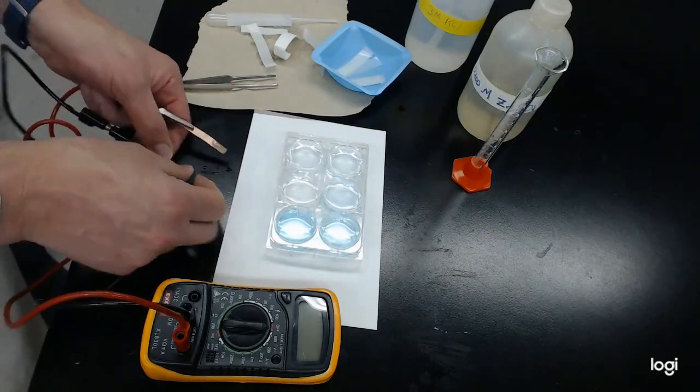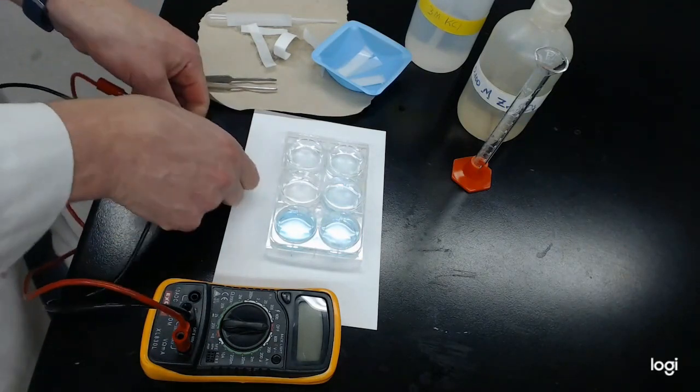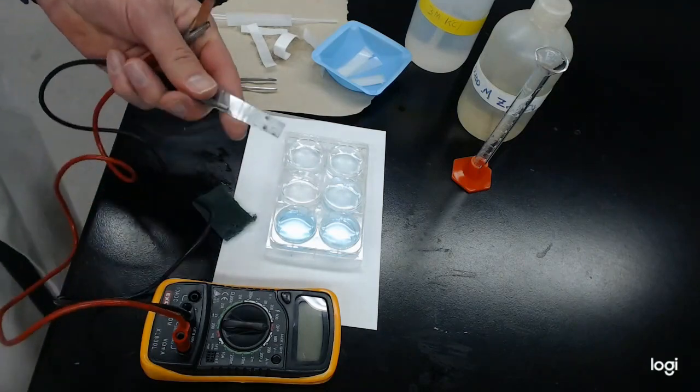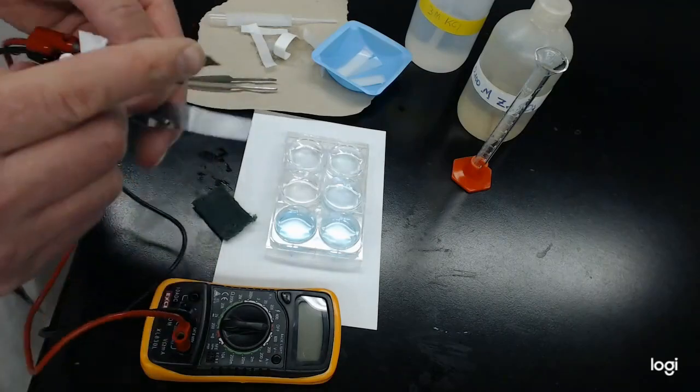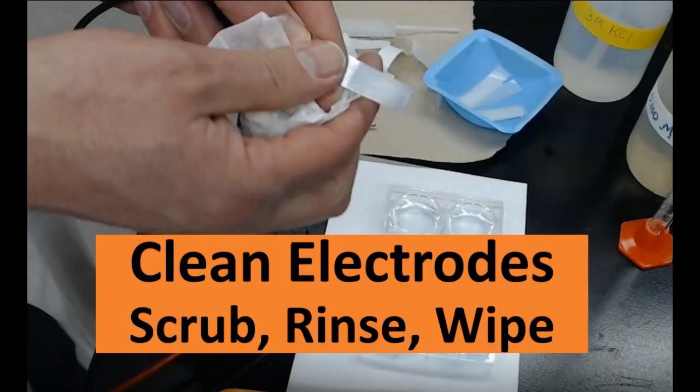Next, you're going to clean your electrodes, scrub them, rinse them, and wipe them down with deionized water. This is very important to get the surface as clean as possible, and they'll react the same way every time.